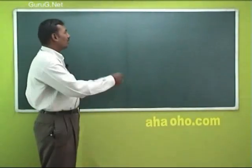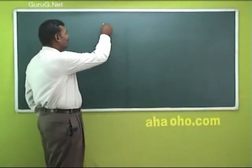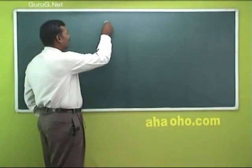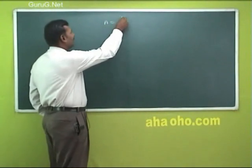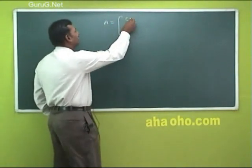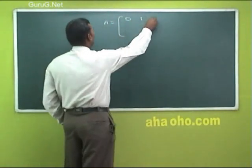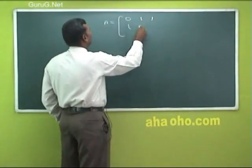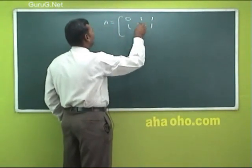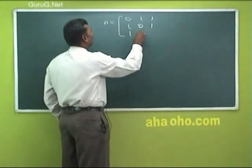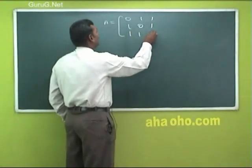If you want to see a problem, you can see A is equal to [[0,1,1],[1,0,1],[1,1,0]].